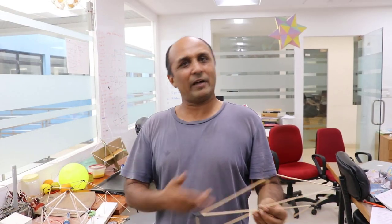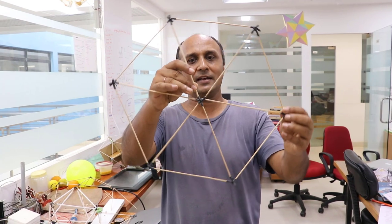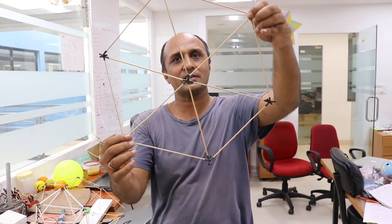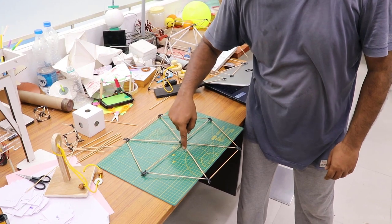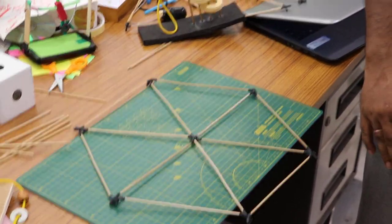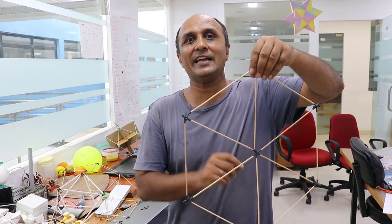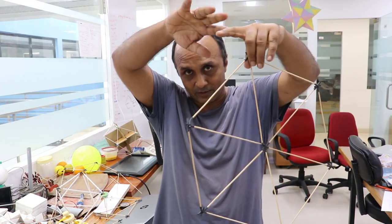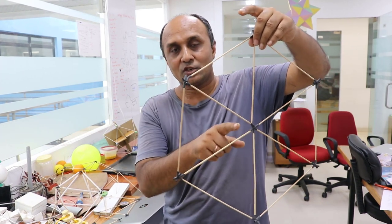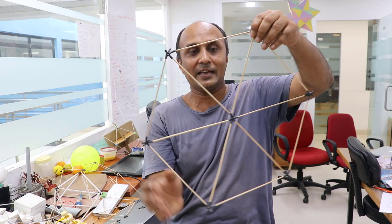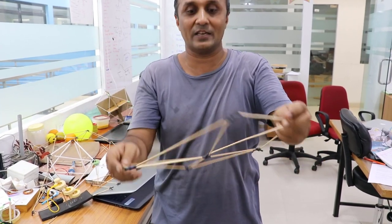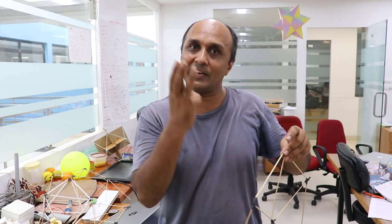Why not 6? Here I have 6 equilateral triangles meeting at a point — 1, 2, 3, 4, 5 and 6. See what happens: this becomes a flat plane. Because each angle is 60 degrees, and 60 times 6 is 360 degrees, making it flat. This tells us we cannot make any 3D convex structure that way. When we have 6 triangles it's flat, and with 7 or more it folds the other way — it becomes concave. So with triangles we can only have 3 platonic solids.